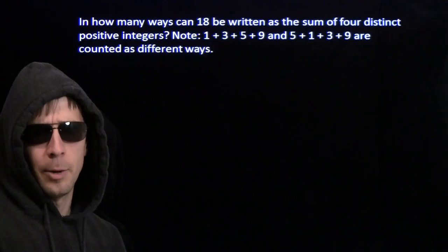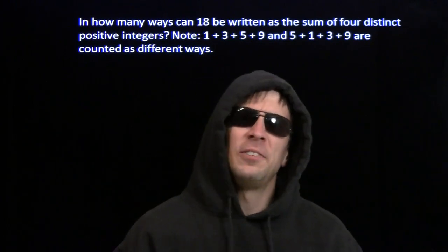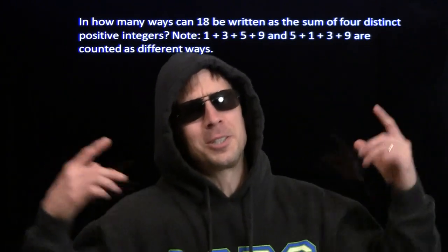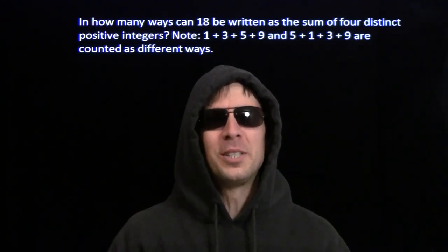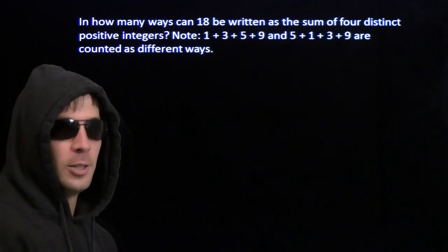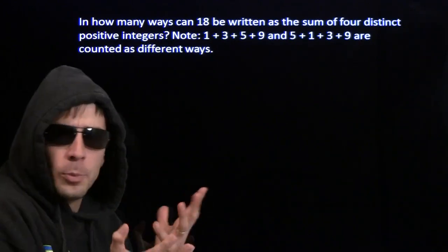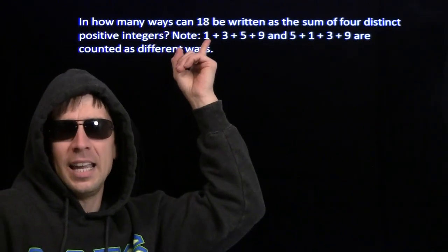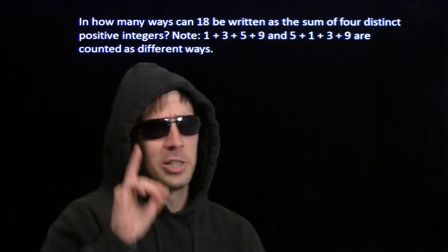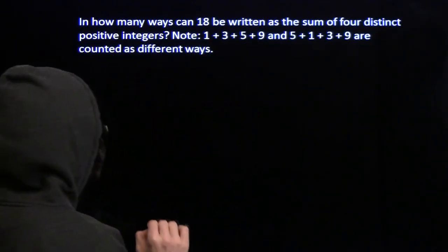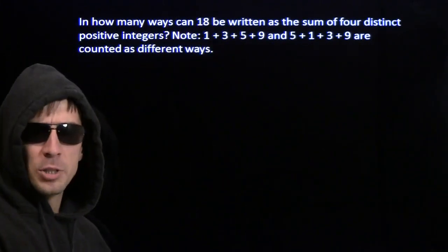Now I'm stuck. That other guy would say: if you can't do something smart, then do something stupid. He'd break out that strategy and just list out the groups of four distinct positive integers that add up to 18. And if you're going to do something stupid, you better be organized about it — it gets even more important when you're doing something stupid.